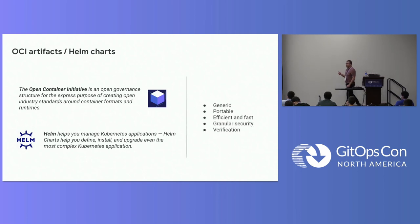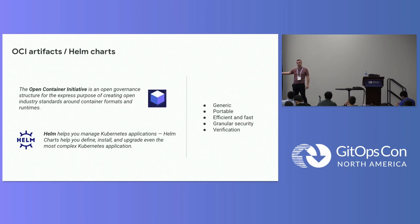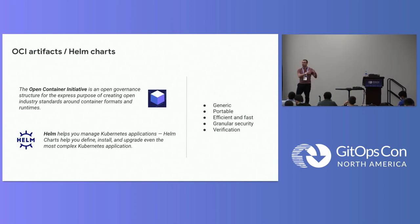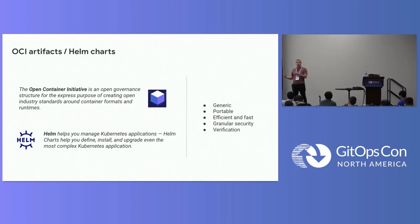There are multiple advantages. It's generic — any files. It's portable, so it's a package you can share across your company. It's efficient and fast because OCI artifacts can be stored in an OCI registry. Just like docker pull on a container registry, you can do an OCI artifact pull — very granular from a security perspective. And like containers, you could do attestation, verification, Cosign, Sigstore, and other tools to sign and attest your OCI artifacts.